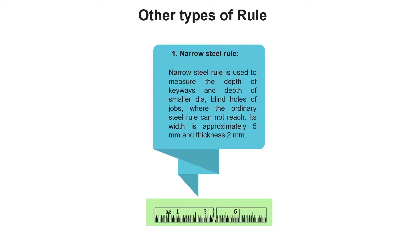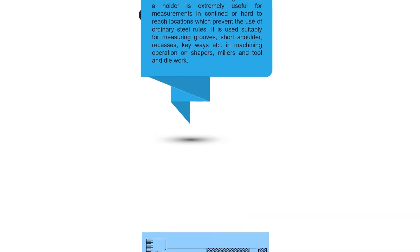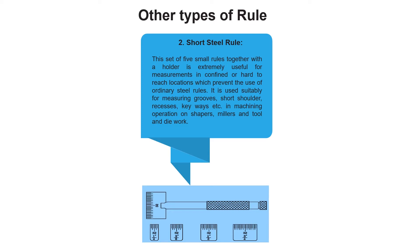The narrow steel rule has a width of approximately 5 millimeters and a thickness of 2 millimeters. A set of five small rules together with a holder is extremely useful for measurements in confined or hard-to-reach locations, preventing the use of ordinary steel rules. It is used for measuring grooves, short shoulders, recesses, and keyways in machining operations on shapers, millers, and tool and die work.